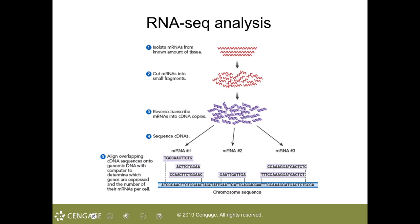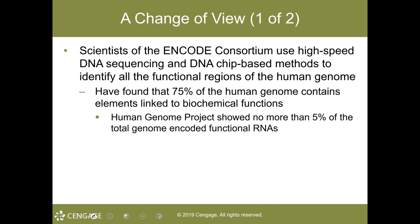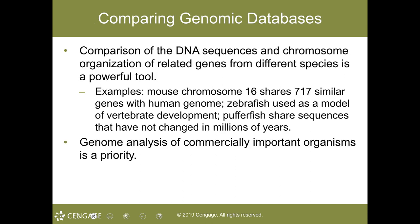Someone can enter newly determined human gene sequences into annotation software, and this information can provide clues about the function of the gene and the structural features of its encoded protein. Now we're moving on to genomics — the study of the entire DNA sequence of an organism's genome to identify all the genes, determine their RNA and protein products, and how genes are regulated. GWAS, or genome-wide association studies, collect simultaneous sequence, expression, and functional data from entire genome analysis.